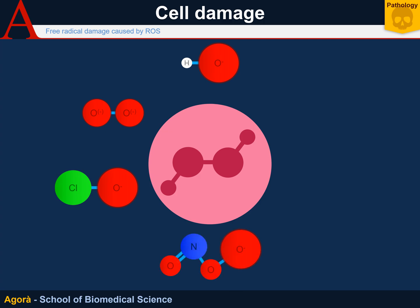Then we have peroxynitrite, which is a peroxide with an oxygen molecule; the singlet oxygen, a very particular resonance form of an oxygen molecule; and hydrogen peroxide, which, despite not being a radical, tends to break down spontaneously into two hydroxyls in almost all physiological conditions.